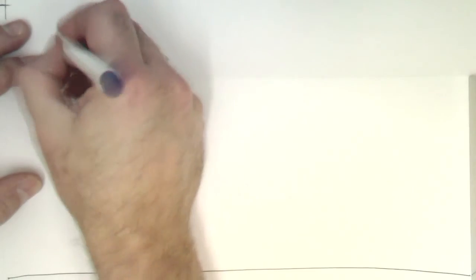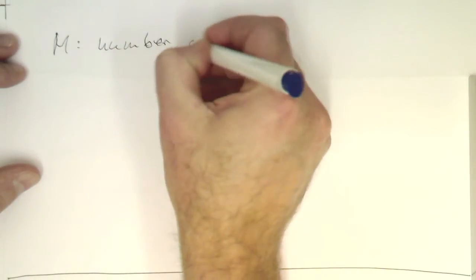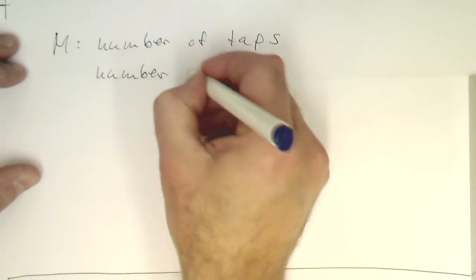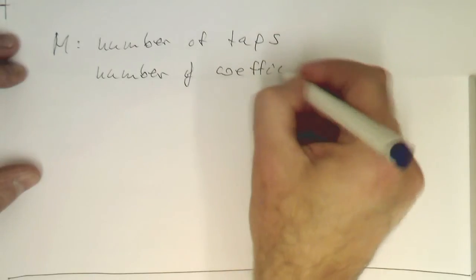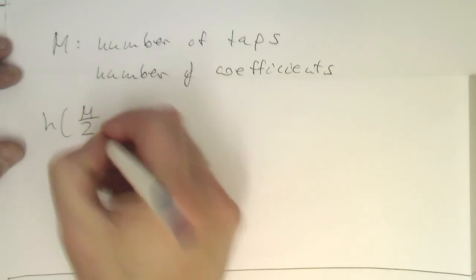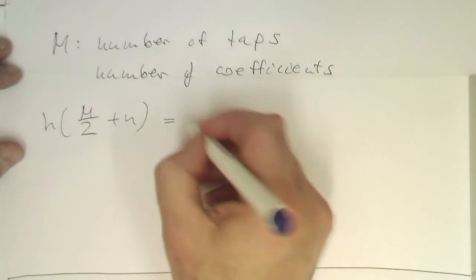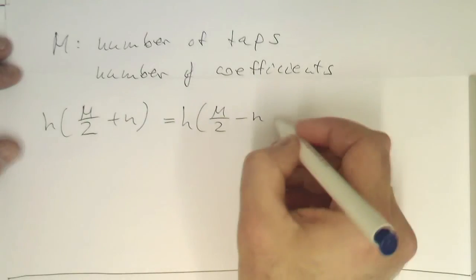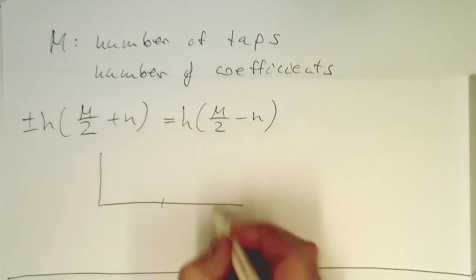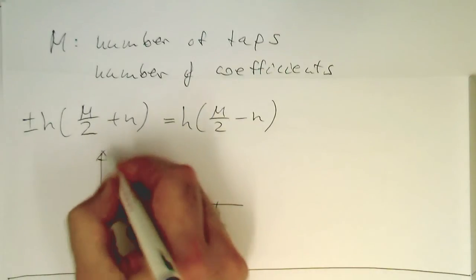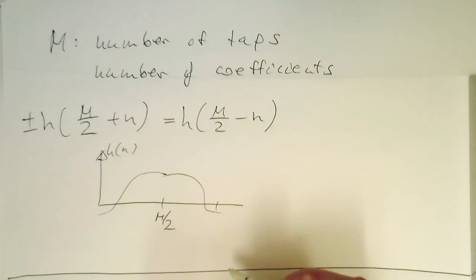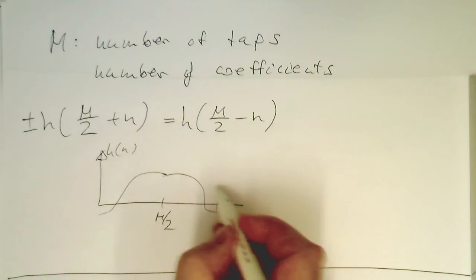So now with the knowledge that if m is the number of taps, or the number of coefficients, so if we have two coefficients, then our impulse response is generated by m half plus n equals to h of m half minus n. And then this can be plus or minus. So this means that we have here in the middle our m half. And then our impulse response needs to be symmetrical here, so like this. So now it can be also obviously also anti-symmetrical like that.